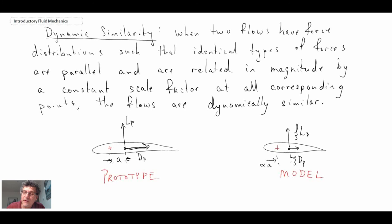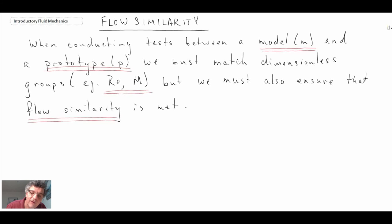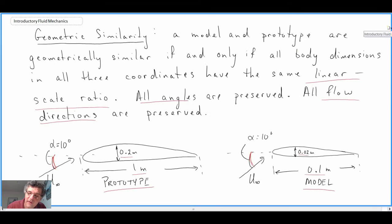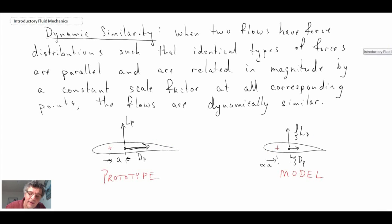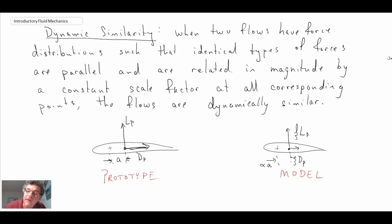So those are the three types of similarity that give us flow similarity. Beyond just matching the Reynolds number or the Mach number if we're looking at compressible flow, we need geometric similarity—that's where the models scale geometrically by constants in terms of the three spatial dimensions and angles and flow directions. We looked at kinematic similarity, where the velocity fields need to scale going from the prototype to the model by some scaling constant. And then finally dynamic similarity, where the forces on the prototype and the model scale with respect to one another.